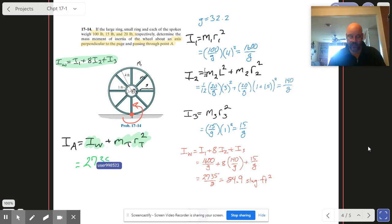Plus I need the mass of the whole thing. That's going to be 100 plus 8 times 20 plus 15, all that over g. And then the distance from the point of interest or the point of the axis of rotation up to the center of mass, which in this case is 4. So we put a 4 on there and square it.